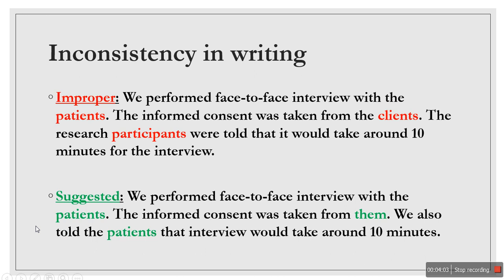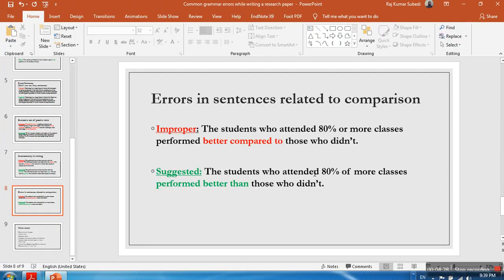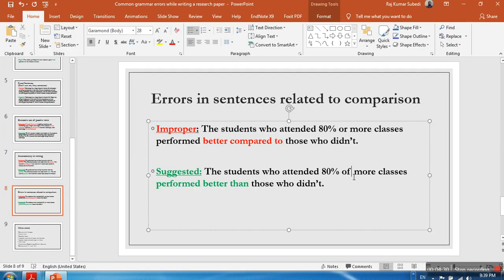Similarly, there are errors in sentences related to comparison. The error is: 'The students who attended 80% or more classes performed better compared to those who didn't.' The suggested revision is: 'The students who attended 80% or more classes performed better than those who didn't.' So 'compared to' should be replaced with 'than' in comparative sentences.